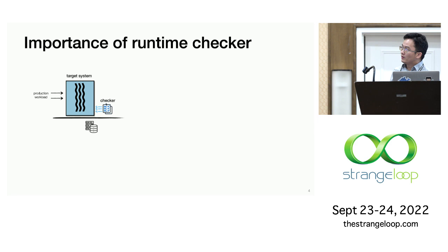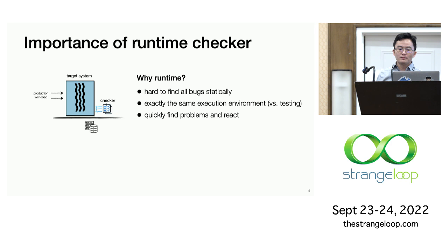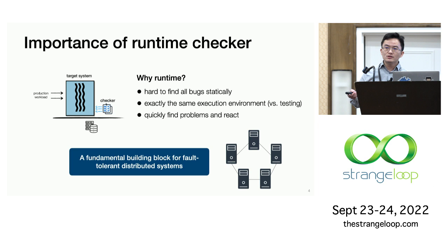There are a couple of reasons why runtime checkers are important. One is that it is very hard, if not impossible, to find all bugs statically. Compared to testing, a runtime checker is exposed to exactly the same execution environment rather than some simulated testing environment, which always has some gaps with the production setup. Compared to post-mortem solutions, a checker executes on the scene so it can find issues quickly and react. For these reasons, a runtime checker is a fundamental building block for designing fault-tolerant distributed systems.